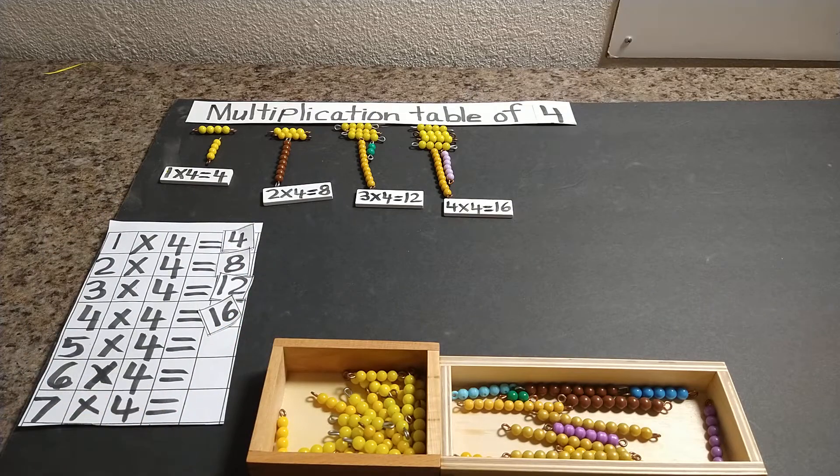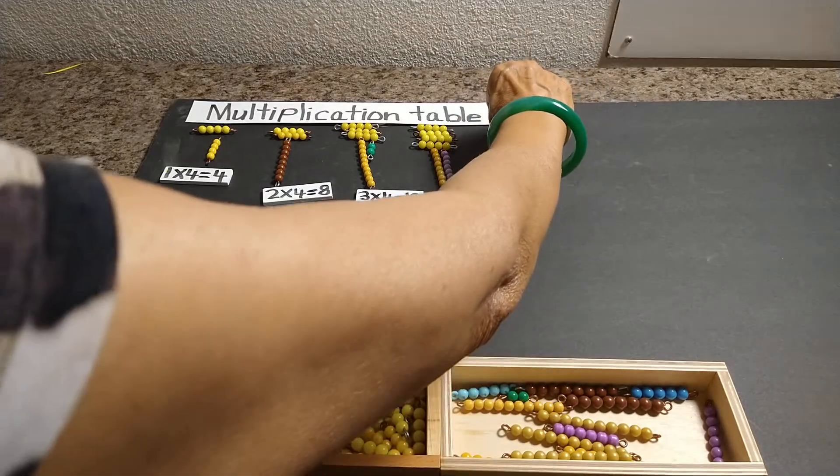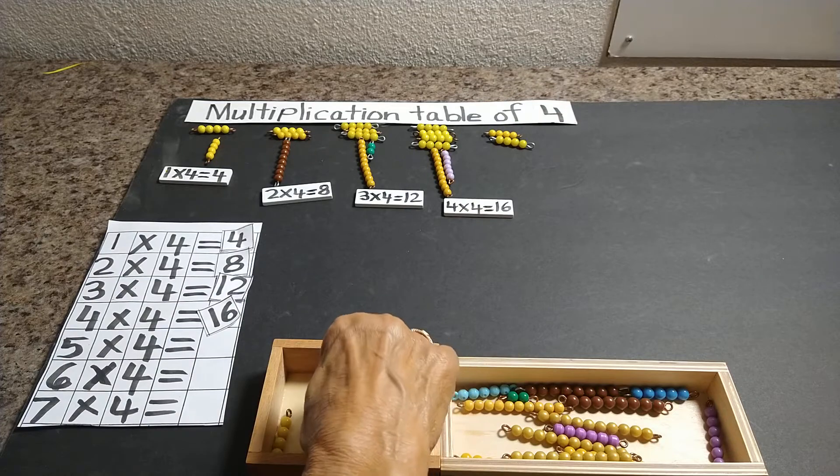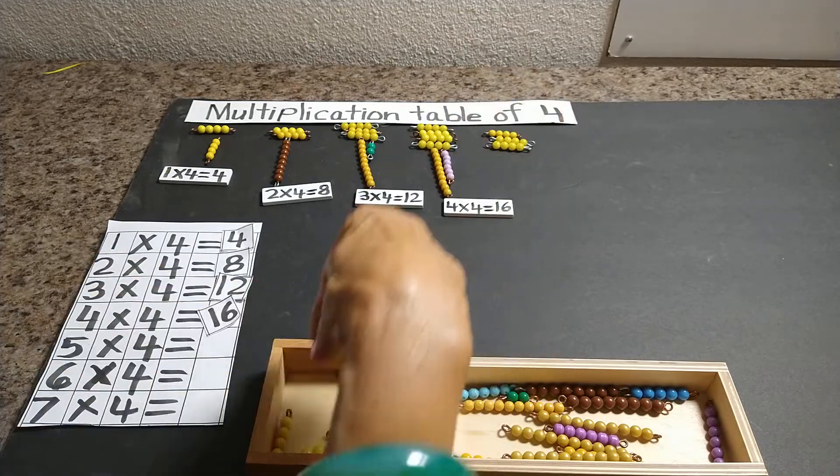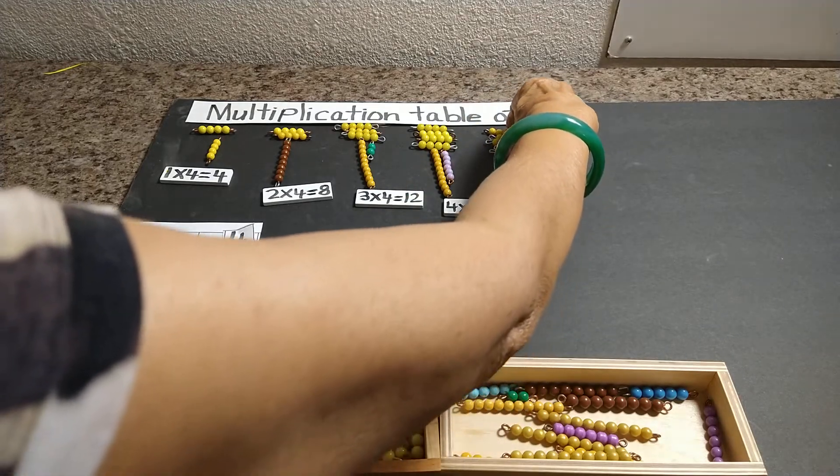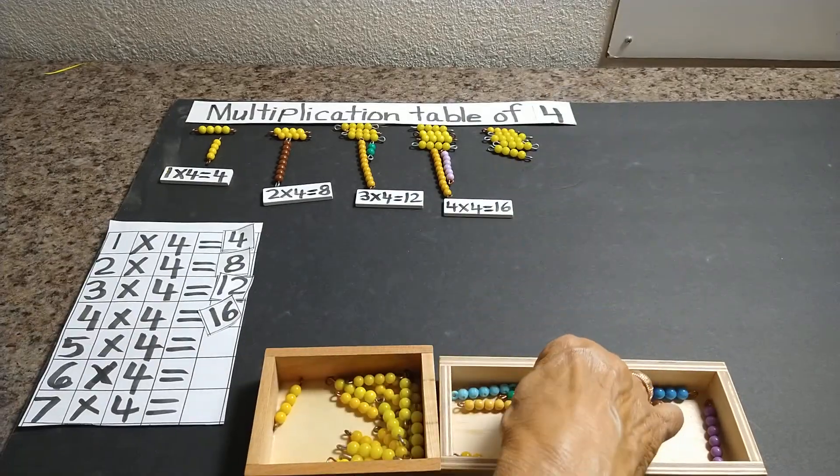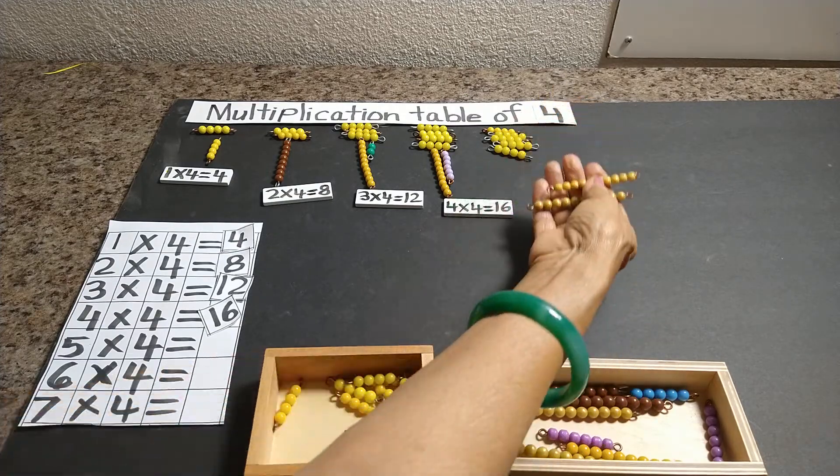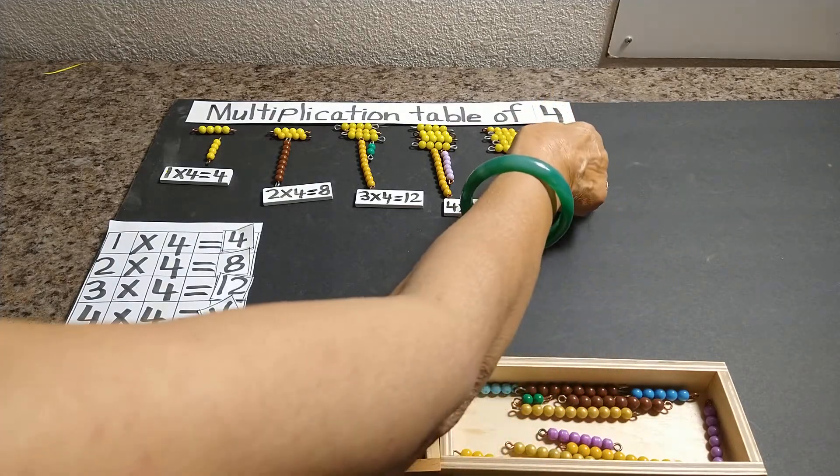5 times 4. 1 times 4, 2 times 4, 3 times 4, 4 times 4, 5 times 4. 5 times 4 is 20 so we need two ten bead bars. 1 ten, 2 tens, 20. 5 times 4 is 20.